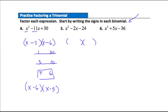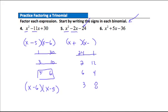Practice Question 5: set up parentheses. The last term is negative — the easiest case — so the signs must be different: one positive, one negative. Firsts give x and x. Factors of 24: 24 and 1, 2 and 12, 6 and 4, 3 and 8. Since signs are different, we're getting a difference — we want a difference of negative 2. The pair 6 and 4 has a difference of 2. To end up with negative 2 I need more negatives, so I put the 6 with a negative sign and the 4 with a positive sign. That gives the correct factoring.